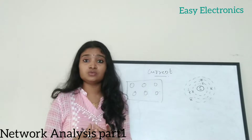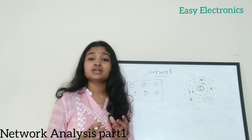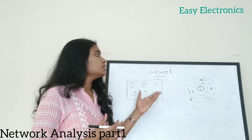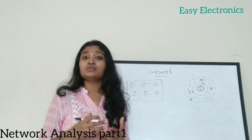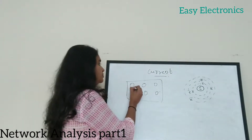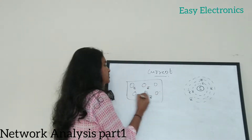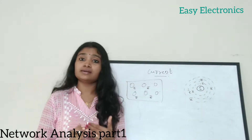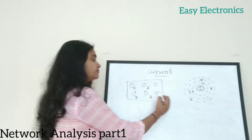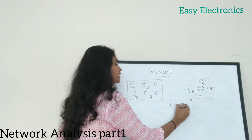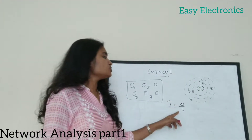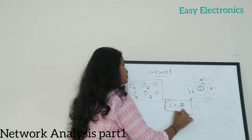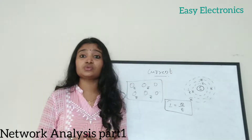These electrons are loosely bound with the nucleus, so it is easy to knock out the electrons from the outermost shell since the force of attraction is less. Due to this, there are a lot of free electrons present inside the conductor, and due to the flow of these electrons, current is generated. Current can be represented as I = Q/T — the rate of flow of charge.